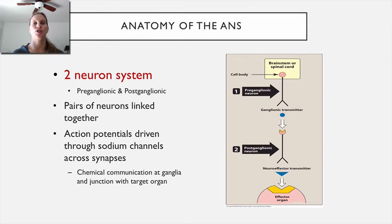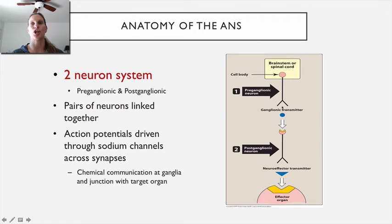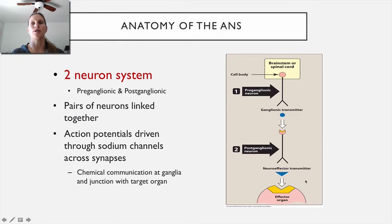Here's the setup of the autonomic nervous system: it's a two-neuron system. The first neuron is called the preganglionic neuron — before the ganglia. Then there's the ganglia, the place where neurons come together and meet. The second neuron is called the postganglionic neuron, and then you have your target — the effector.